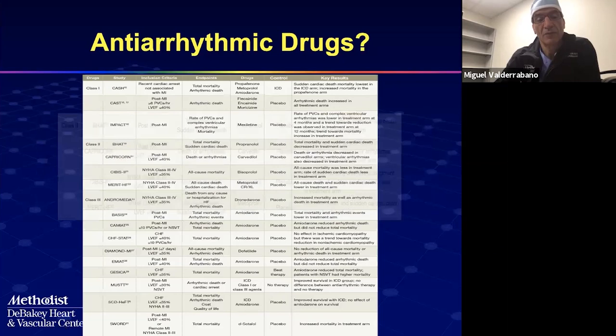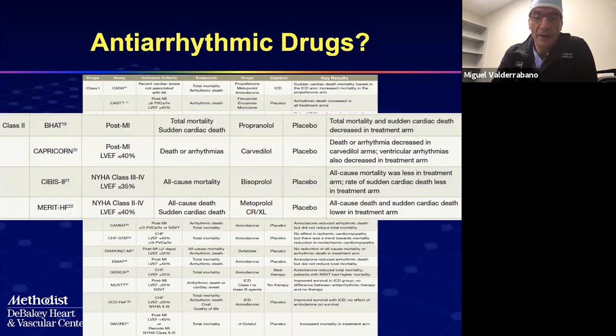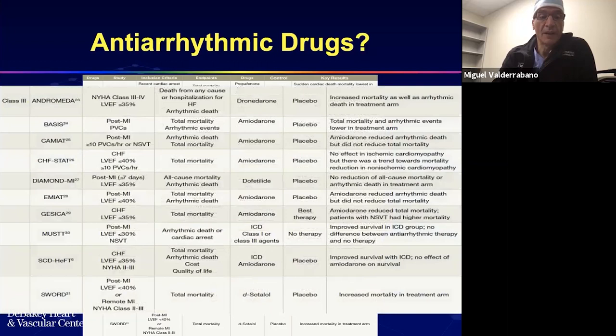Class 2 drugs — beta-blockers — are part of the essential treatment of congestive heart failure. All of them have improved mortality, and some have also reduced sudden cardiac death. These patients will always be treated with beta-blockers as tolerated.